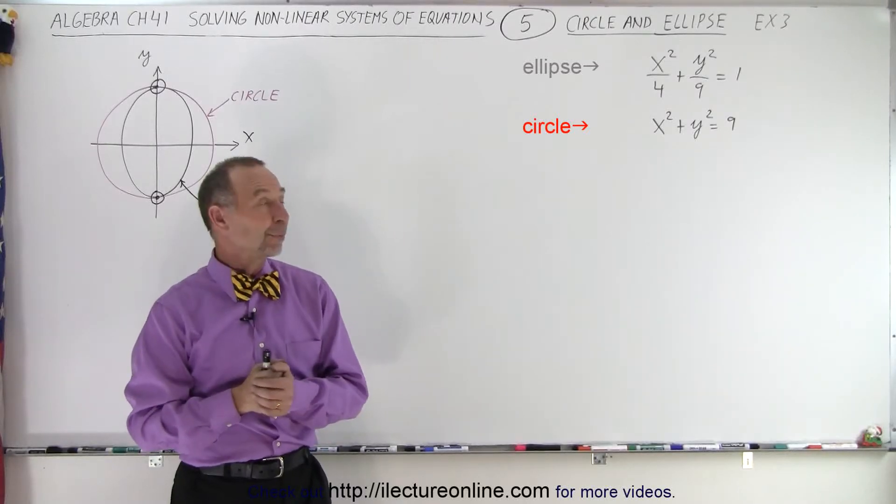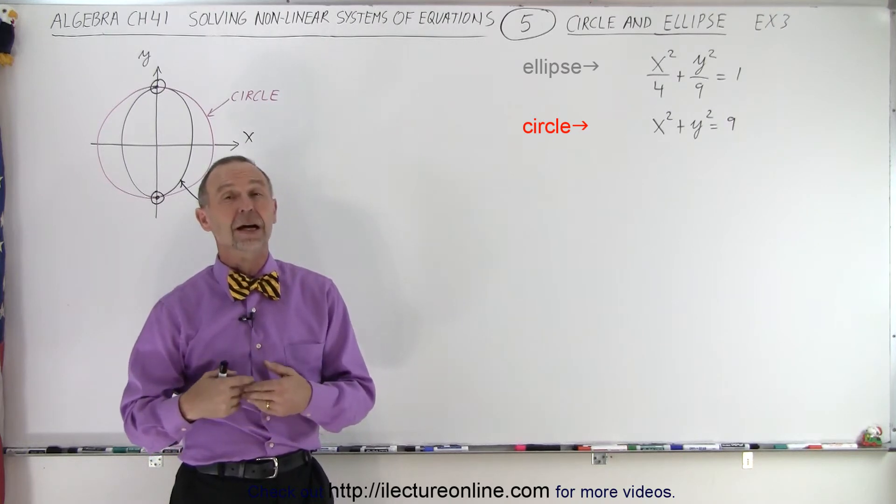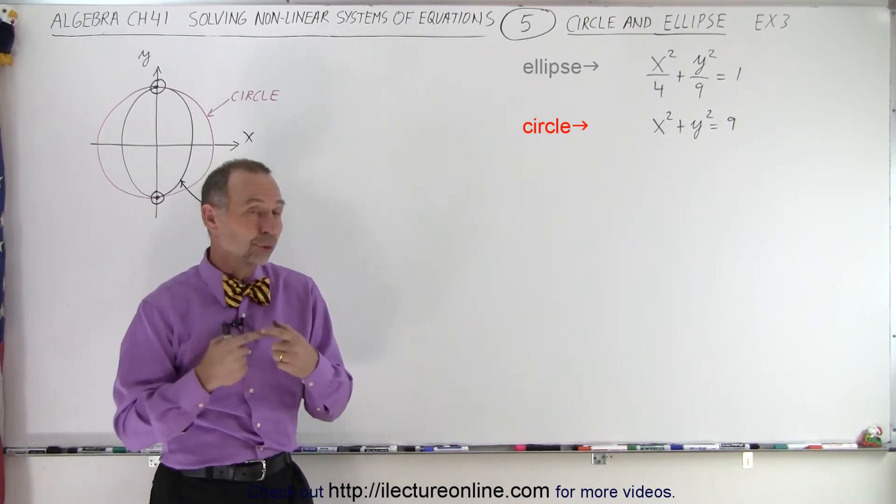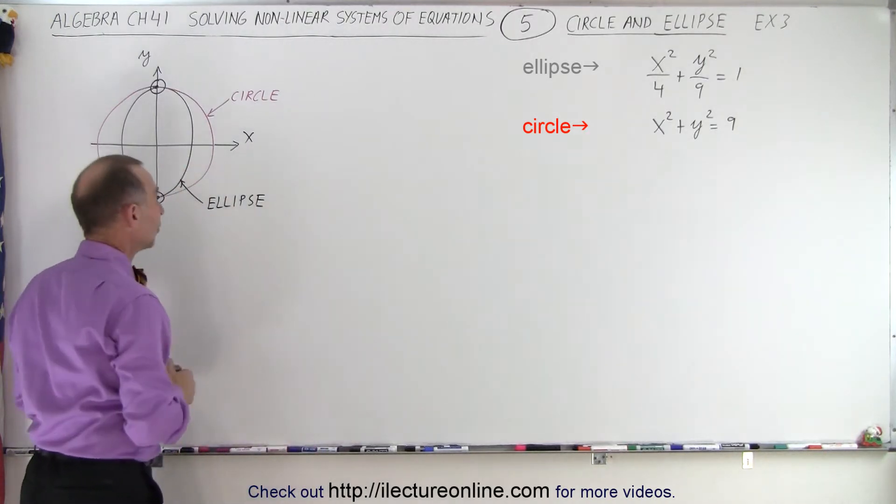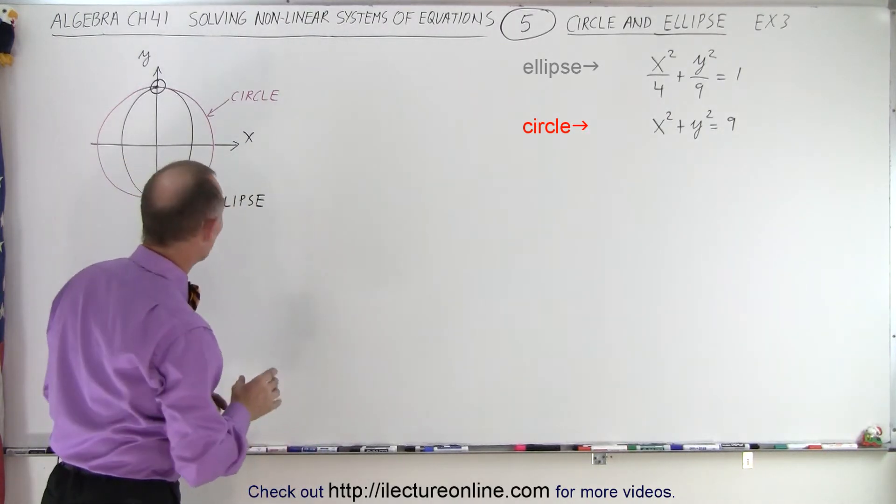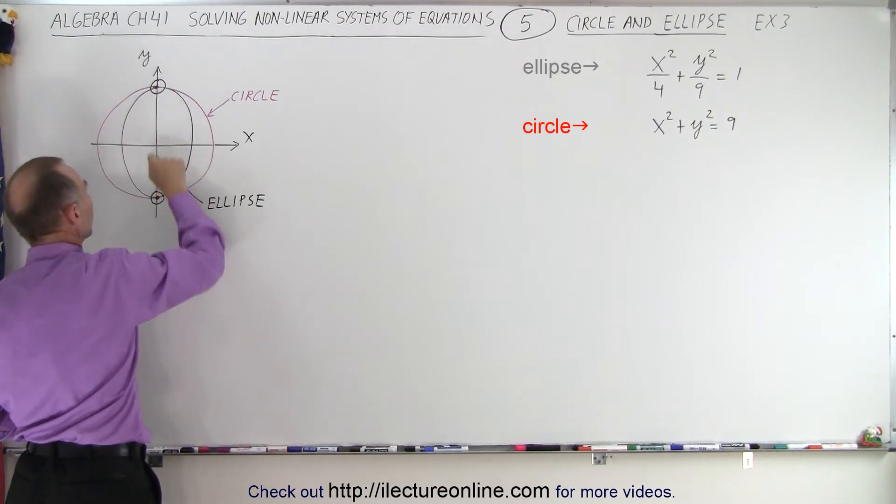Welcome to iLecture Online. Here we have a circle and an ellipse, and we're trying to find the common solution, the points where the two equations cross. There's only two places where the circle and the ellipse take up the exact same point, which is on those two points right here.